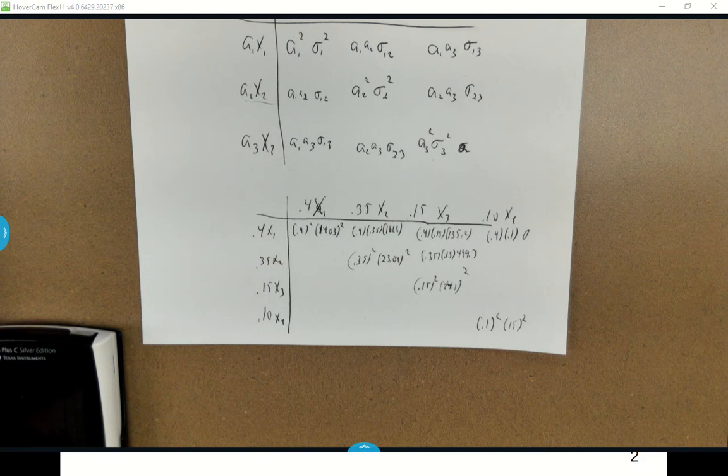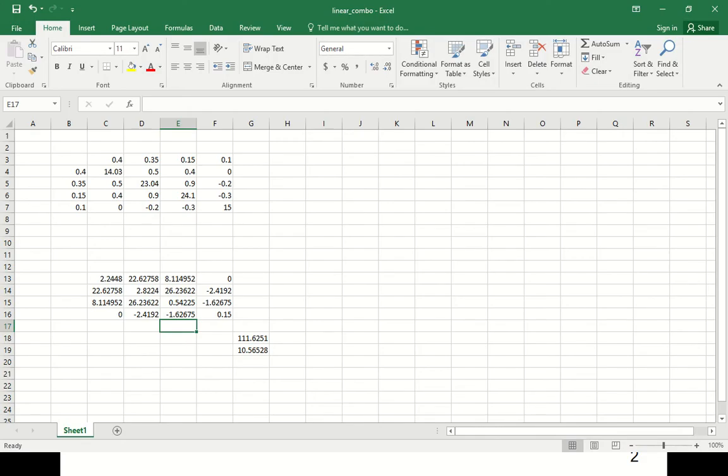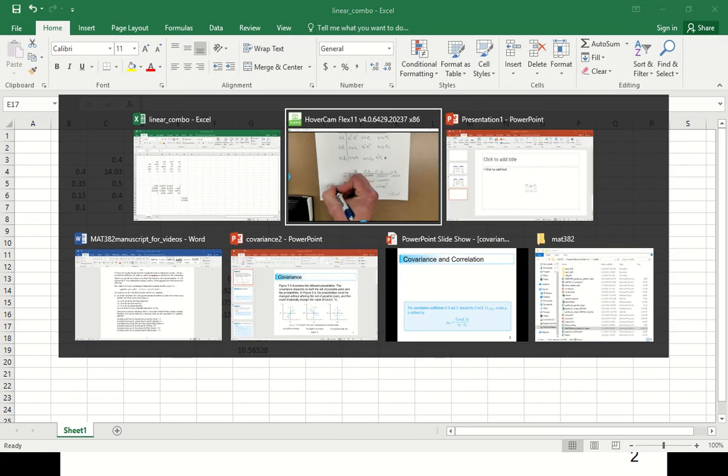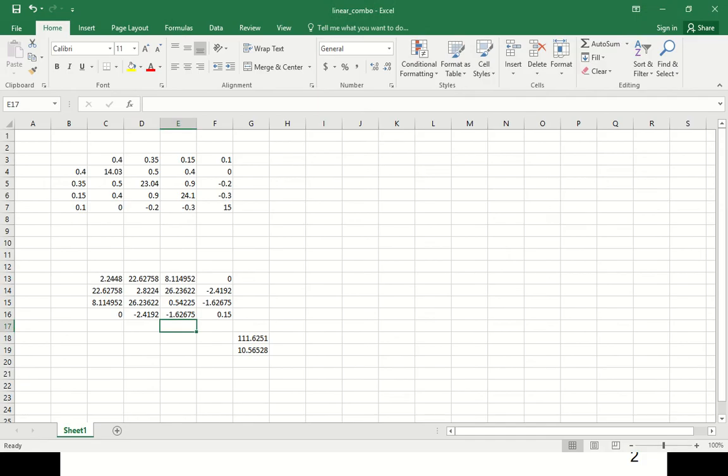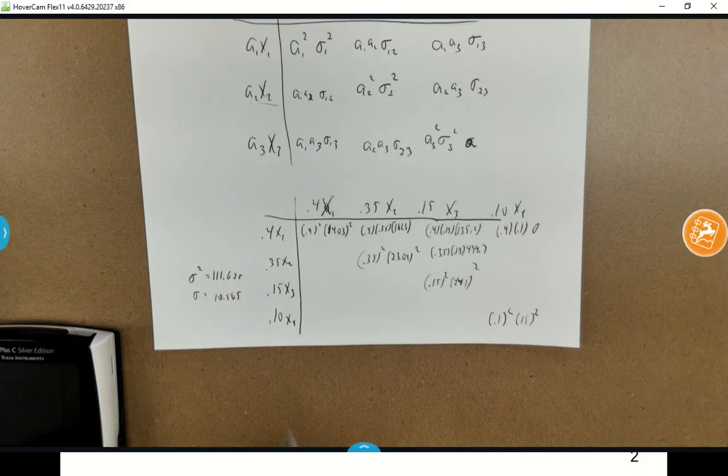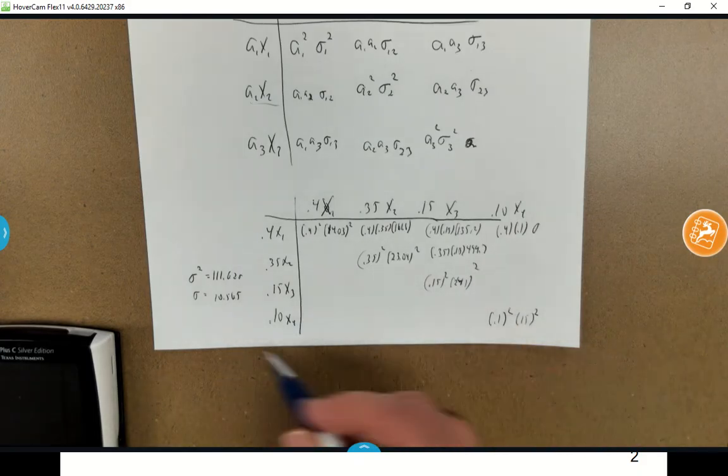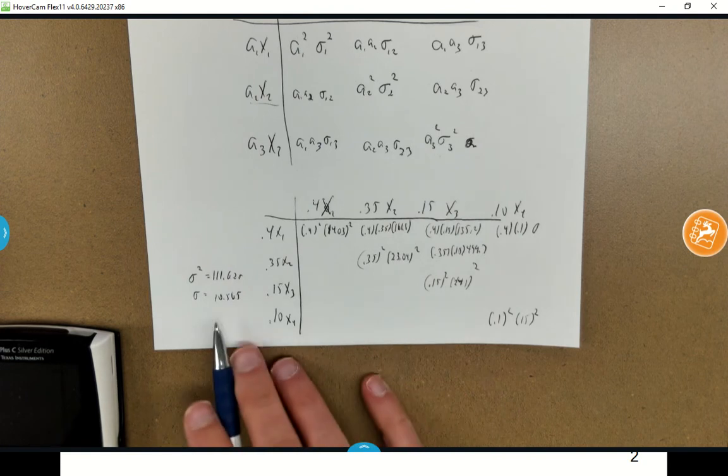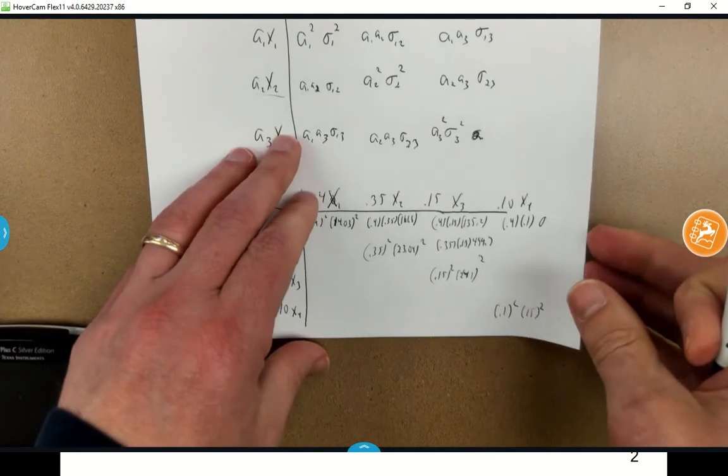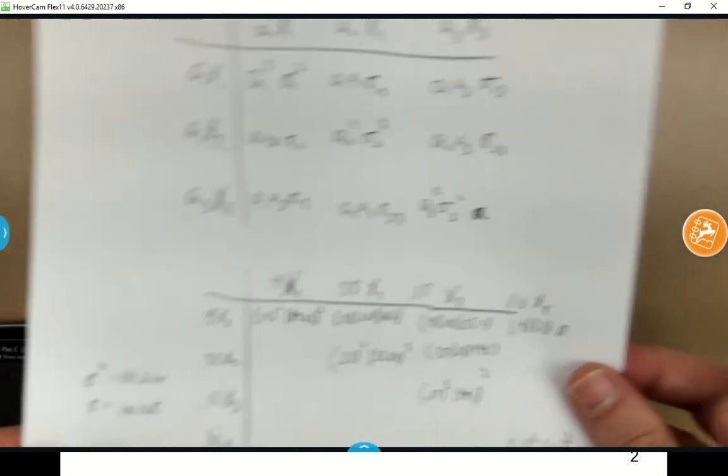What I did was I filled in the rest of this chart, used Excel, and what I ended up getting was that sigma squared is 111.625. And if you take the square root of that, we get 10.565. You have to add up all these rows and columns. You don't have a problem as complicated as that, but this is just to let you know how you might do it if you had some sort of portfolio to figure out what your variance is.